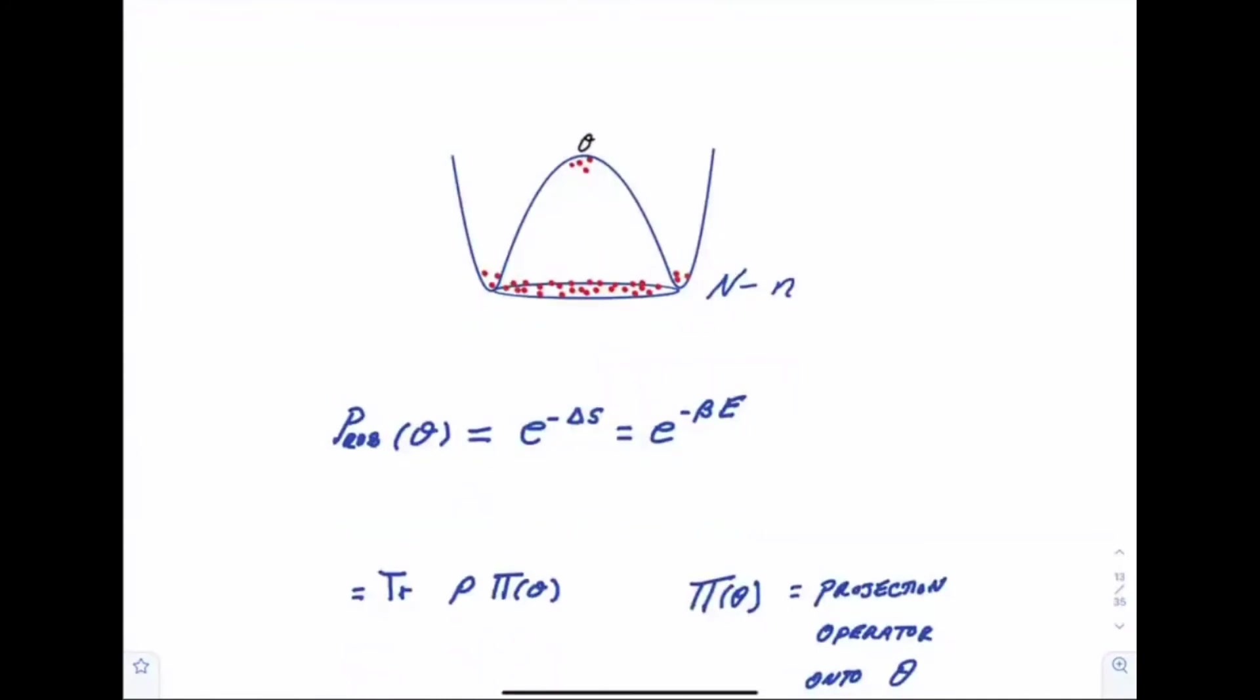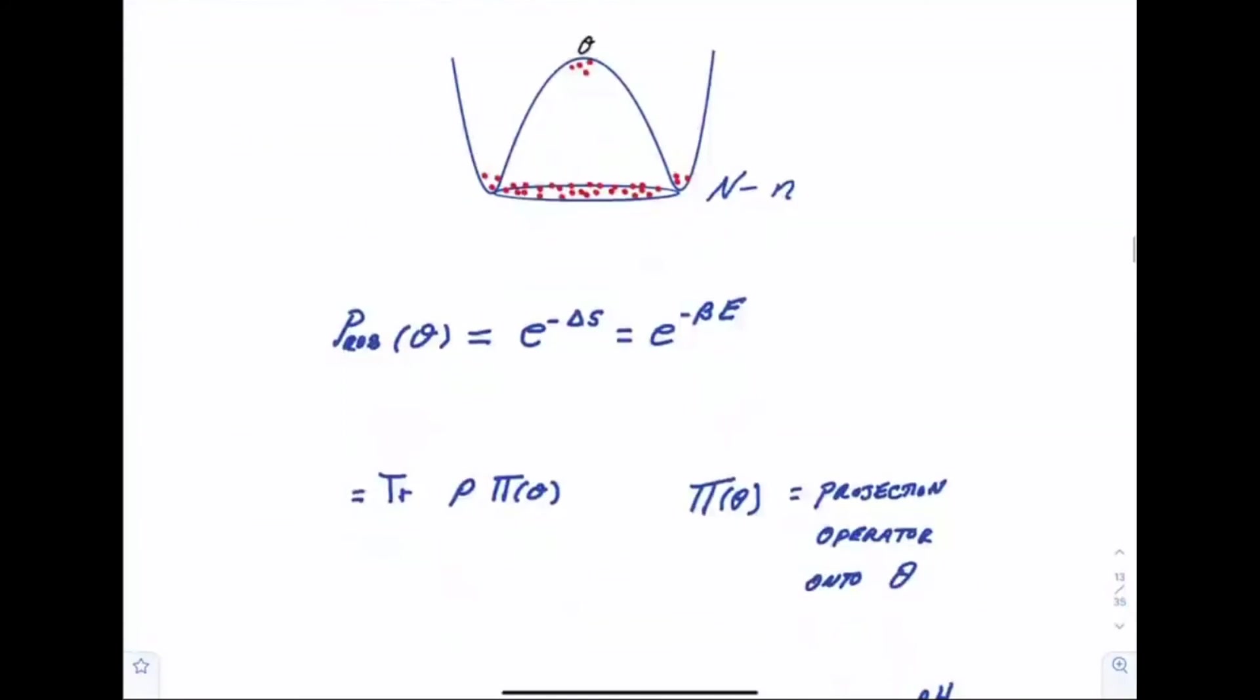Okay, the questions that I want to address is how do you calculate the probability for these fluctuations? And I'm going to give you three formulas for the probability of a fluctuation. One is you calculate the entropy of the system constrained to have the Boltzmann fluctuation present. I'm calling the Boltzmann fluctuation theta. Constrain subject to the condition that the Boltzmann fluctuation is present. Calculate the entropy of the system.